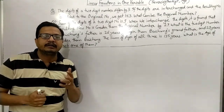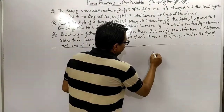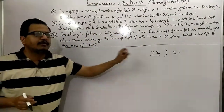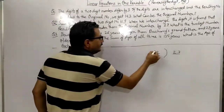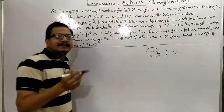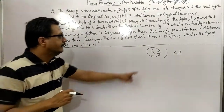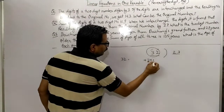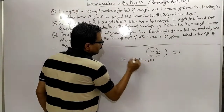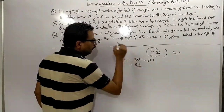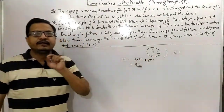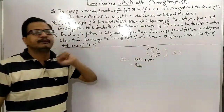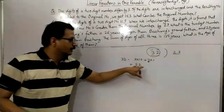Let me explain how a two-digit number is formed. For example, if the number is 32, its reverse would be 23. I'll tell you how a number is formed using its unit digit and tens digit. The digit at the units place is multiplied by 1, and the digit at the tens place is multiplied by 10. When you add them, you get the number. So for 32: 2×1 + 3×10 = 32.